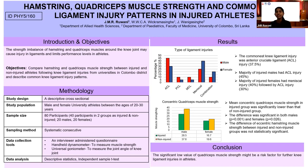My conclusion is that knee ligament injuries cause muscle strength imbalance around the knee joint, and this might be a predisposing risk factor for further injuries. Thank you.